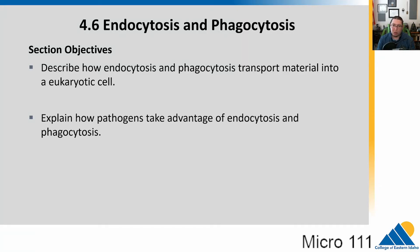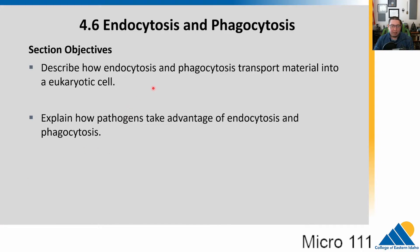In the last part of chapter four, we're going to talk about two processes called endocytosis and phagocytosis. These are basically ways to move things across the membrane that don't involve diffusion or transmembrane proteins. This is how we move really big stuff into and out of a cell. We'll also talk about how pathogens can actually take advantage of this to hide inside of our cells.